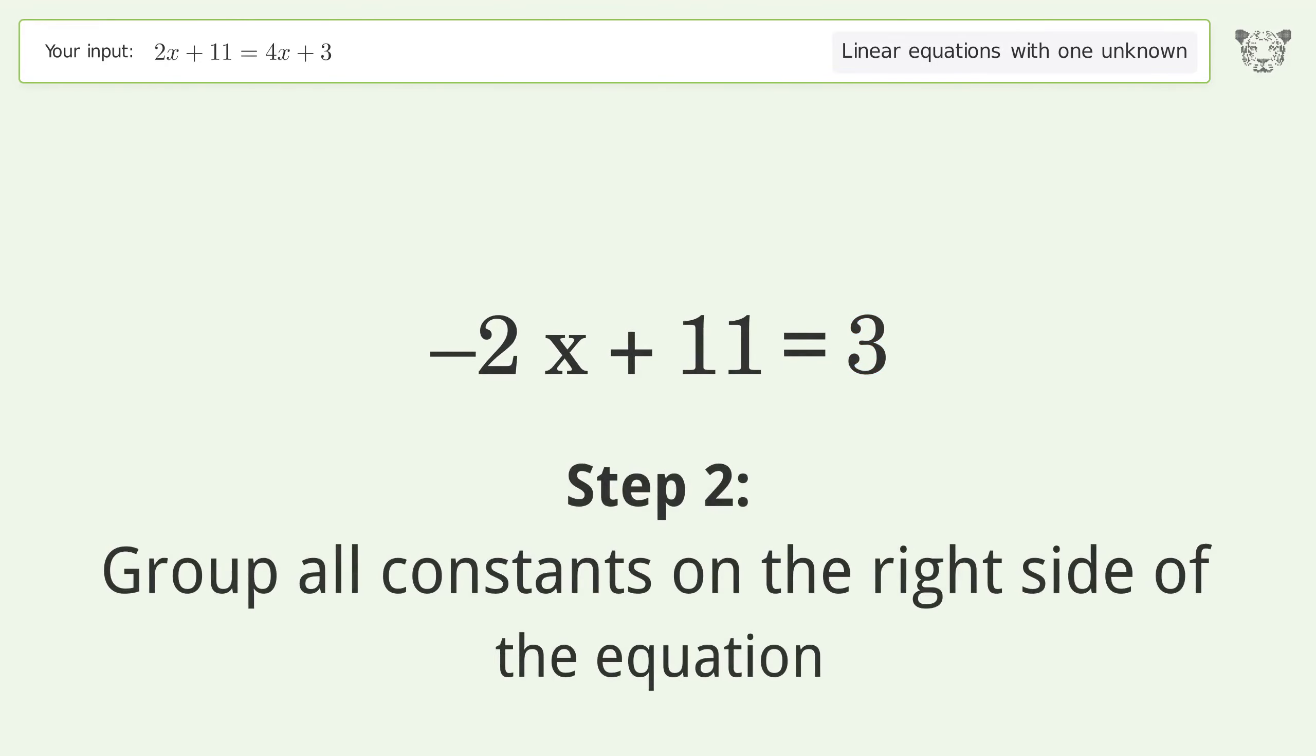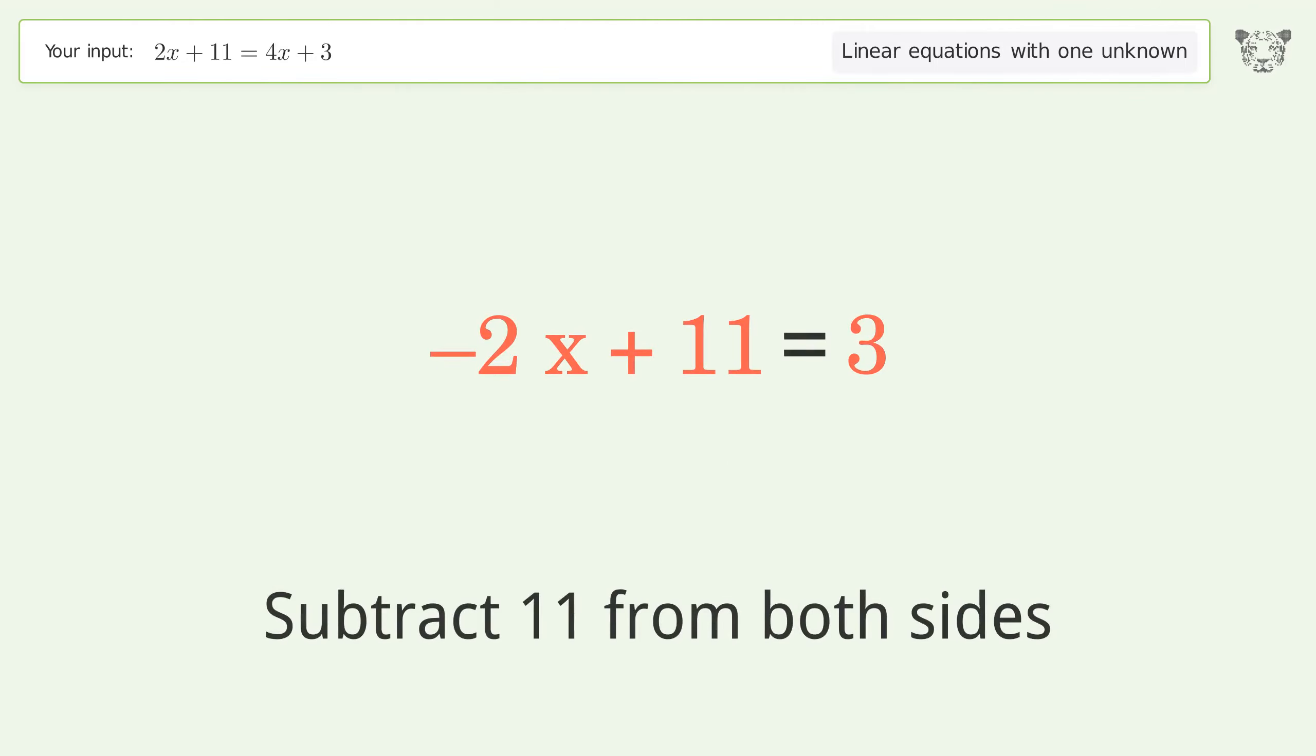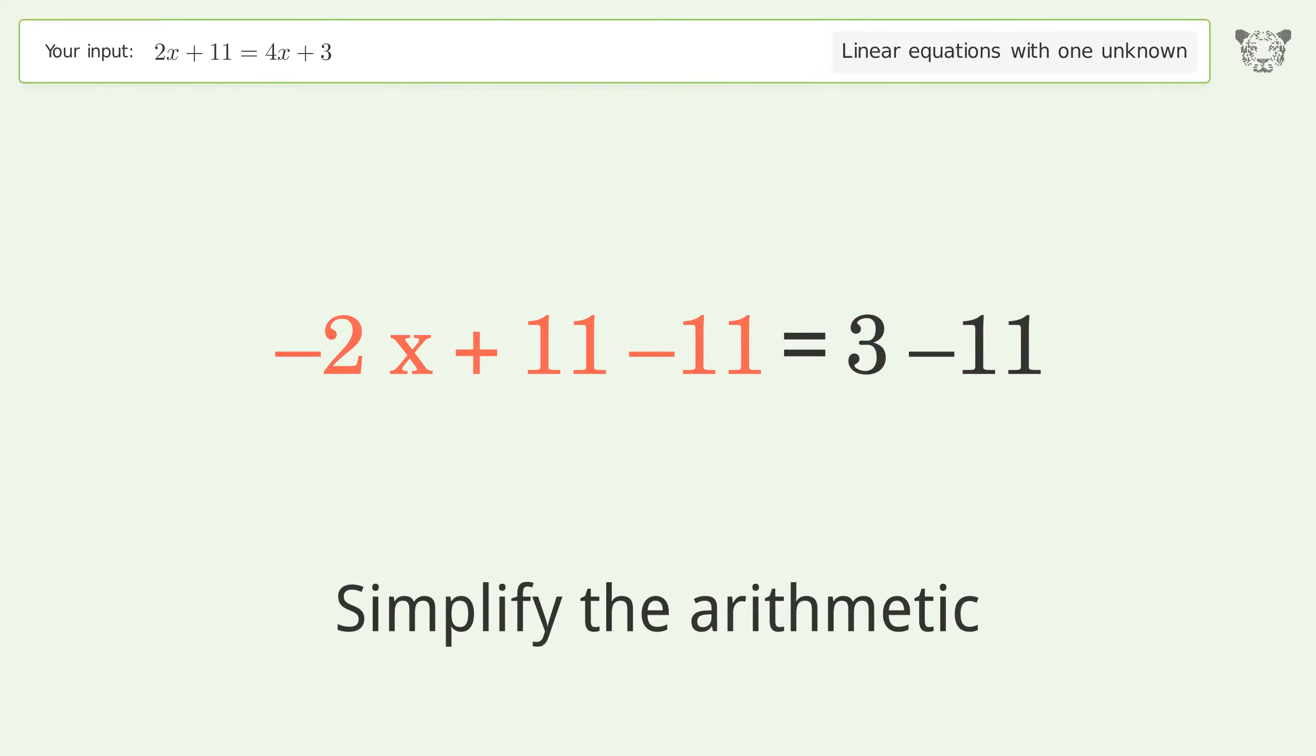Group all constants on the right side of the equation. Subtract 11 from both sides. Simplify the arithmetic.